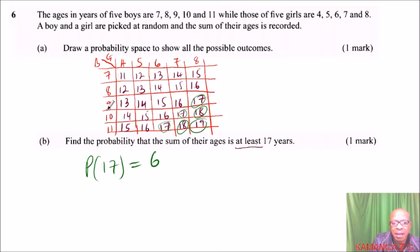And here we have 5 times 5 outcomes because here we have 1, 2, 3, 4, 5 times 1, 2, 3, 4, 5. So 5 times 5 is 25, or you can count this: 1, 2, 3, 4, 5, you find it is 25. This is 6 over 25, not 26 but 25. And looking at 6 and 25, we cannot simplify any further. So that is the probability that the sum of their ages is at least 17, and you get one mark.